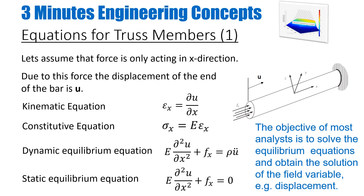So just to recap what we know until now, before we go into the technical details of today's video: we know the relationships for the kinematic equation in the 1D case for our truss member, which relates the strains with the displacements. We know the constitutive equation in the 1D case, which relates the stresses with the strains. And based on the equilibrium equations, we know our dynamic and static equilibrium equation. The goal is to find the unknown field variable — the displacement, denoted by U — by solving these differential equations.